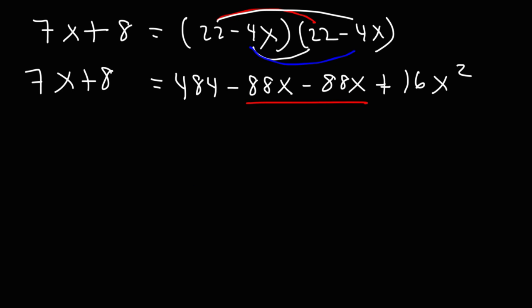Now let's combine like terms. So we're going to have 16x squared, negative 88 minus 88, that's negative 176x, and then plus 484.